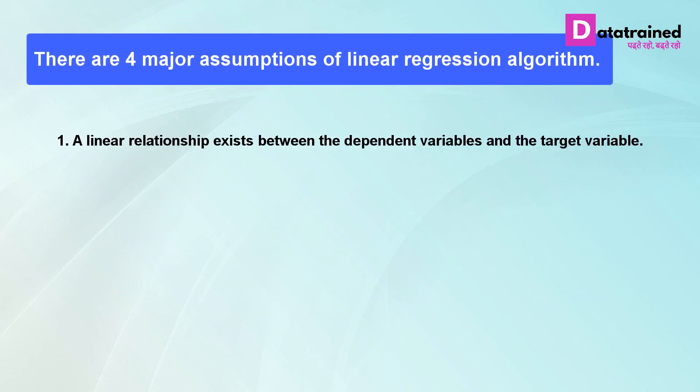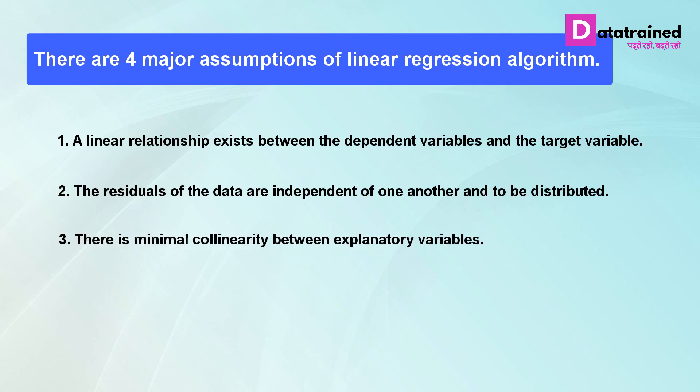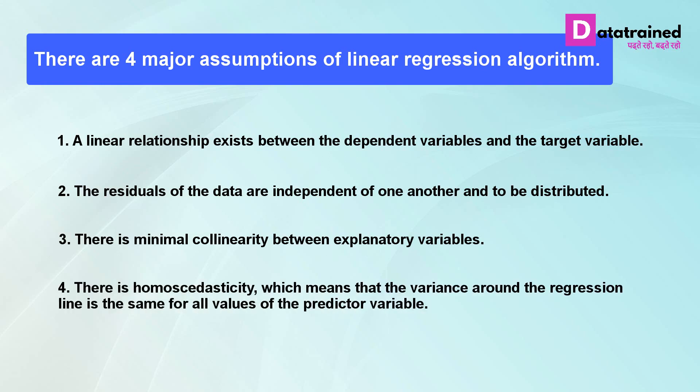A linear relationship exists between the dependent variables and the target variable. The residuals of the data are independent of one another and normally distributed. There is minimal collinearity between explanatory variables. There is homoscedasticity, which means that the variance around the regression line is the same for all values of the predictor variable.